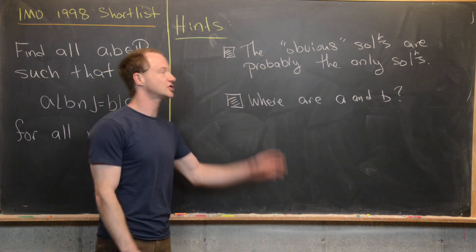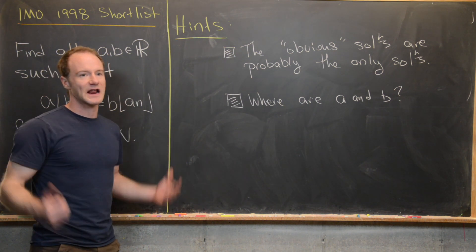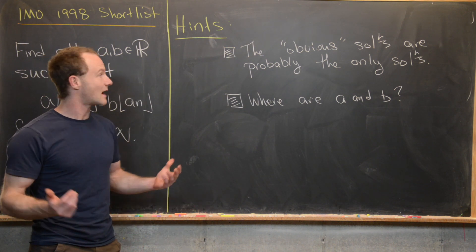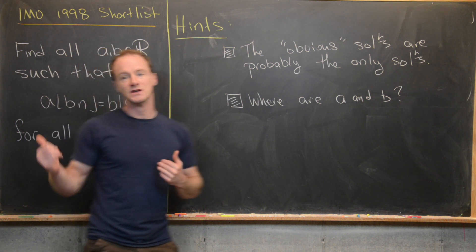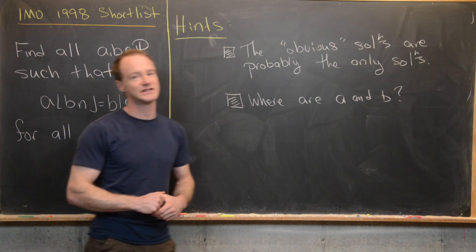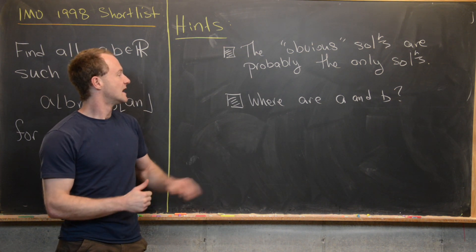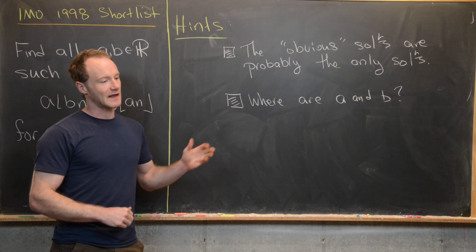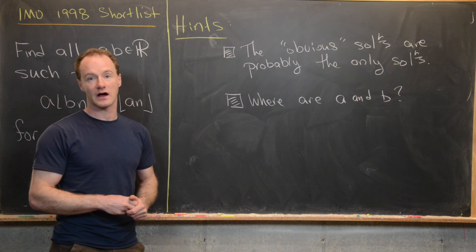Before we look at a solution, here are some hints. The obvious solutions are probably the only solutions. Notice that if A or B equals zero, you're good to go — actually if either equals any integer, you're good to go. Also think about where A and B lie between two integers; that fractional part idea can be helpful in the calculation.